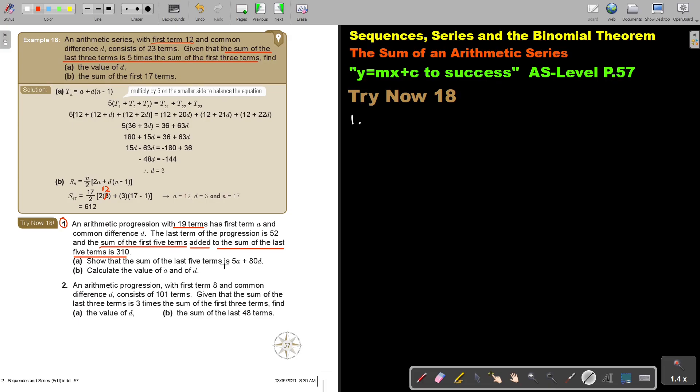So basically, I say, with 19 terms, this is very important also. I show that the sum of the last 5 terms will be 5A plus 80D. Now, remember, if there's 19 terms. Let's just make it A. If it's 19, then it's actually 19, 18, 17, 16, 15. And 1, 2, 3, 4, 5. And it's the sum. So, add, add, add, add.